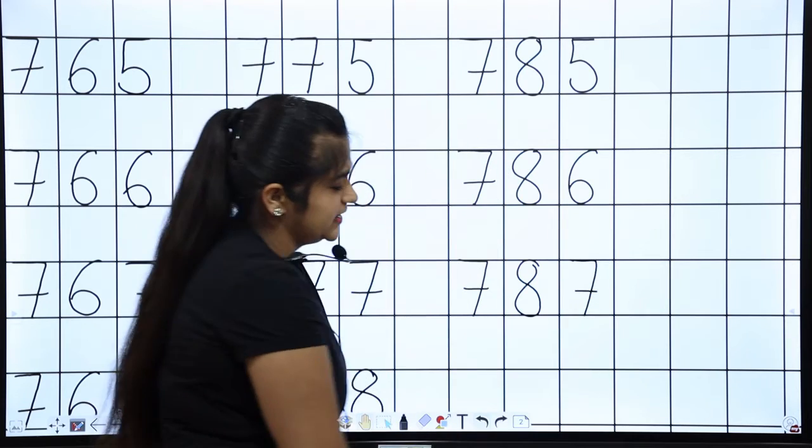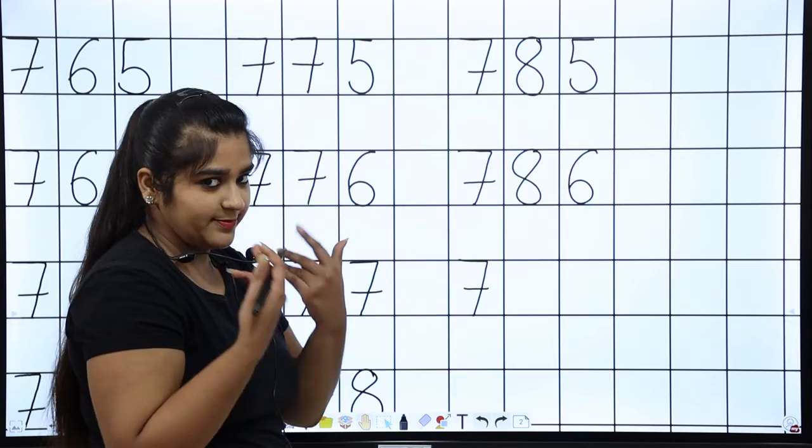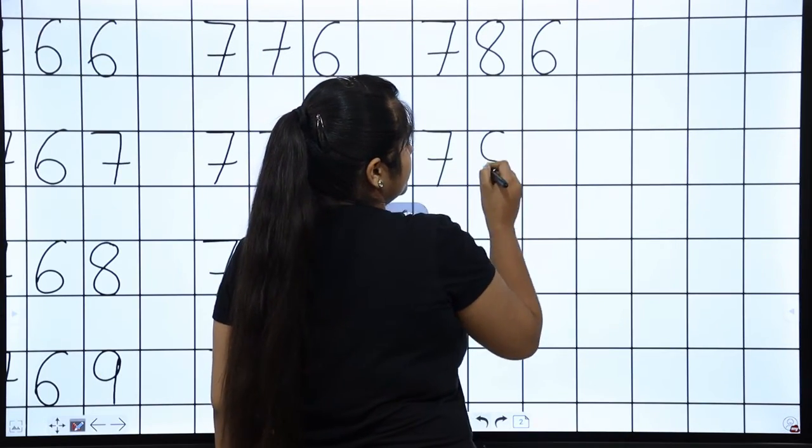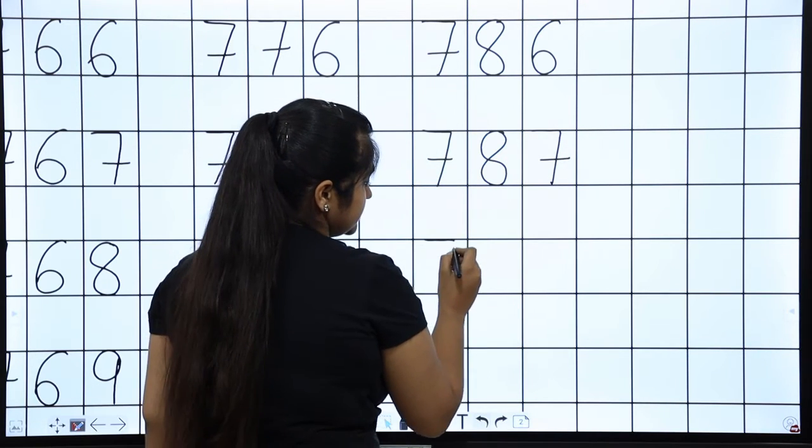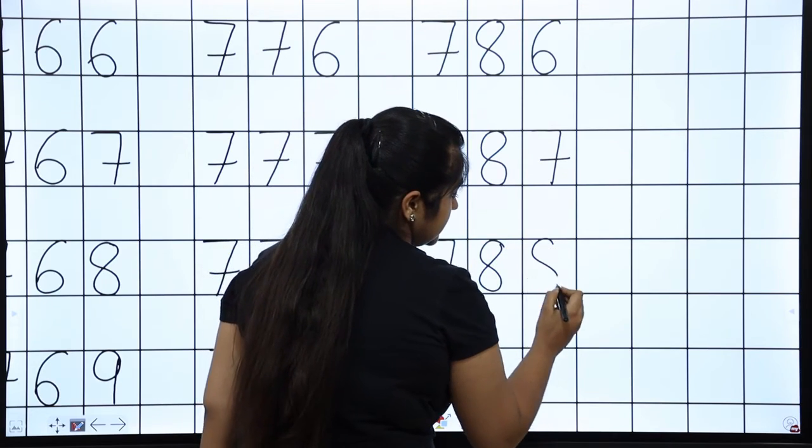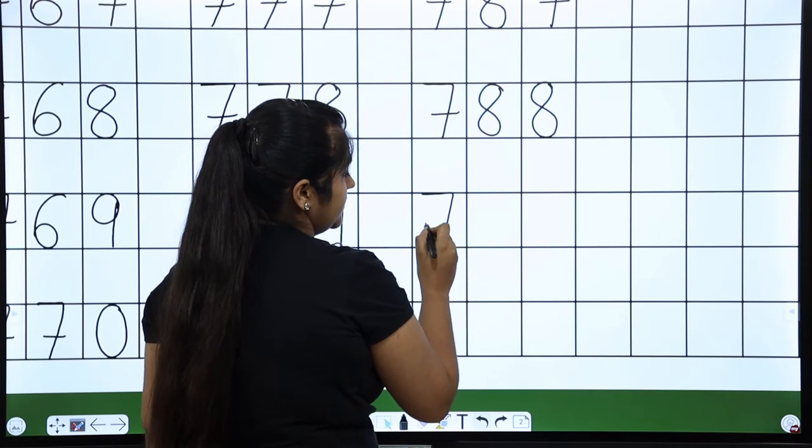Seven hundred eighty-seven. Ma'am, you made eight so bad. Yes, ma'am doesn't have to do it good. We have to do it. Seven hundred eighty-seven, seven hundred eighty-eight, seven hundred eighty-nine.